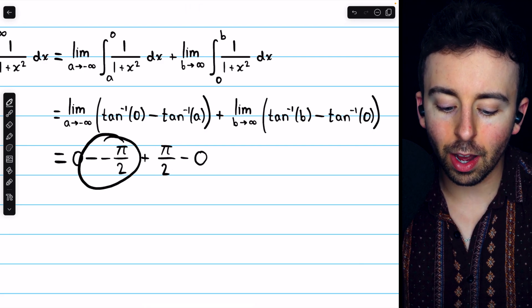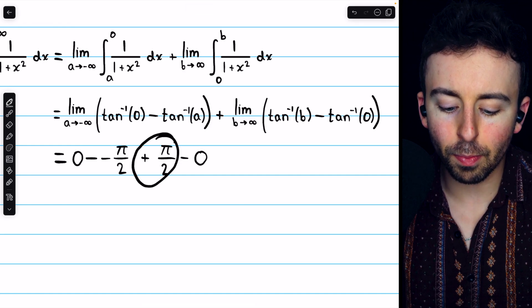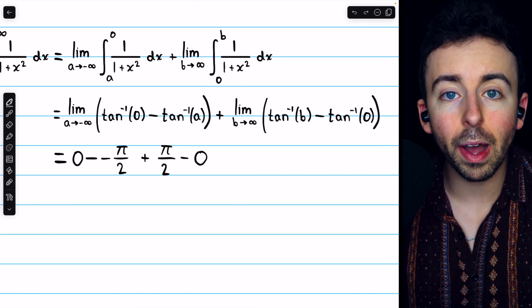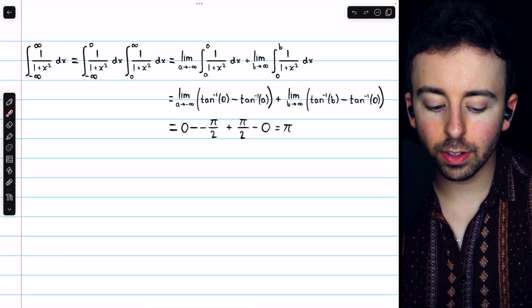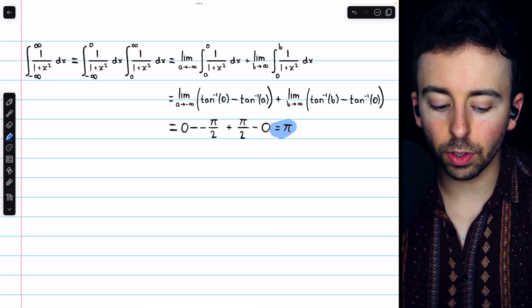Of course, this ends up being a positive pi over 2, and another positive pi over 2. So, 2 pi over 2, or just pi. So, this improper integral does exist, and it's equal to pi.